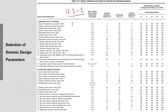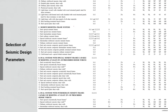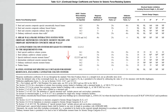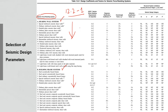In Table 12.2-1 you can see a list of different seismic force resisting systems: bearing wall systems, building frame systems, moment resisting frames, dual systems, and other systems. The last columns correspond to seismic design categories B, C, D, E, and F. The symbols used are: NL meaning no limit, NP meaning not permitted, and numbers like 160, which represent the height limit in feet up to which the structural system is permitted.